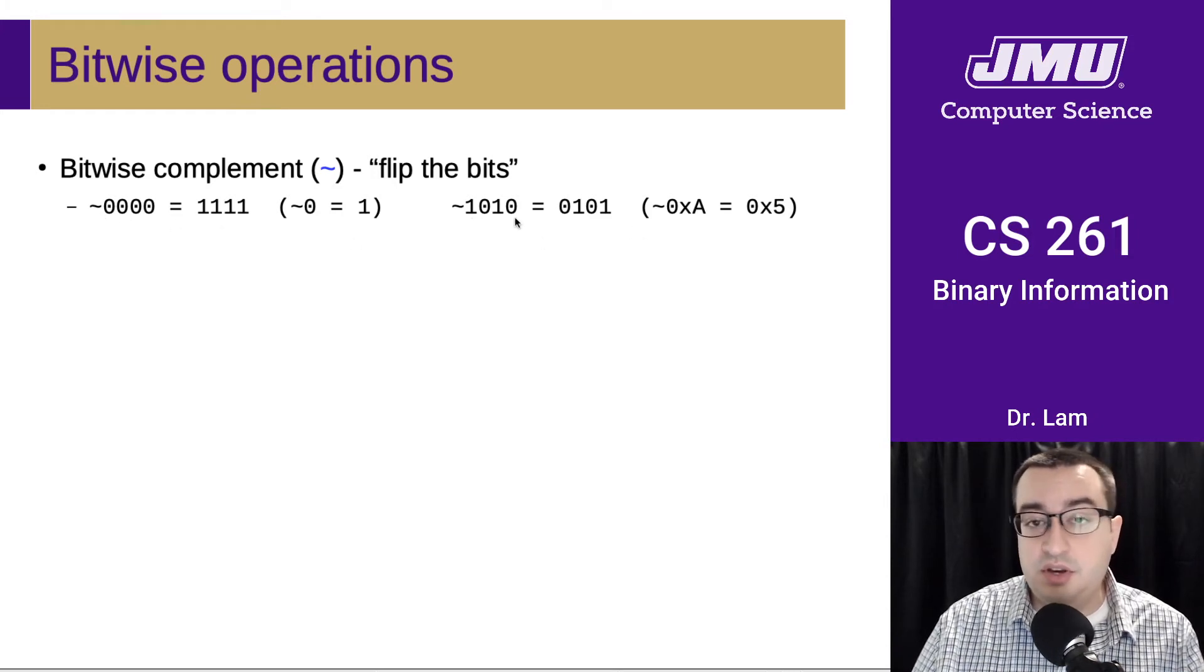Here's another example. If we have hex A, we form the complement, which means flipping every individual bit, and that gets us 5. This means that hex A is the complement of 5.